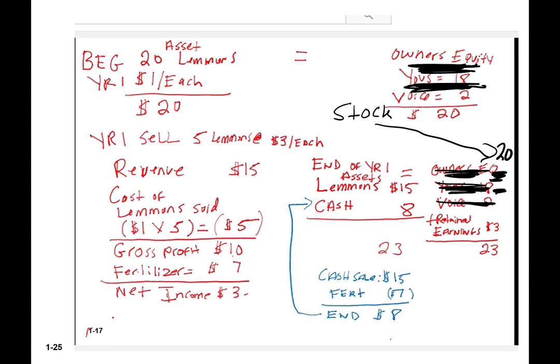We sell five lemons at $3 each — revenue of $15. But we have to report the cost of those things we sold. Those lemons cost us $1 each, and we sold five of them — so we report cost of lemons sold of $5. $15 minus $5 means we have gross profit of $10. We sold them for $15 but they cost us $5 — gross profit of $10.